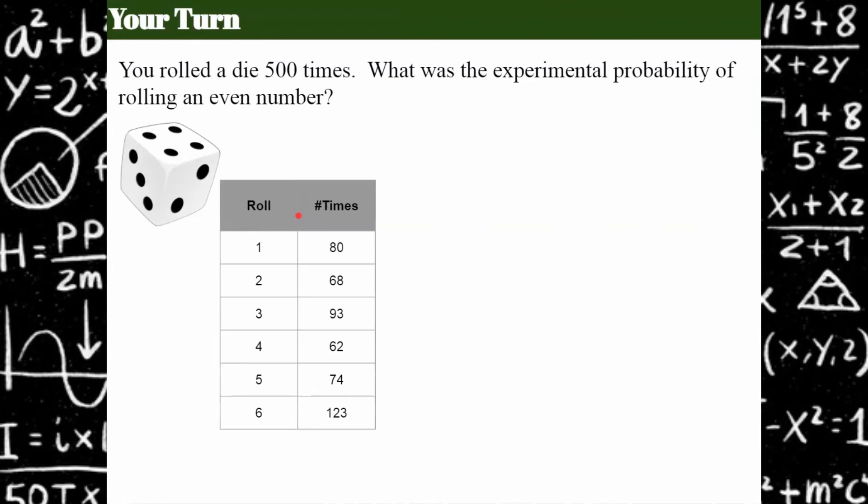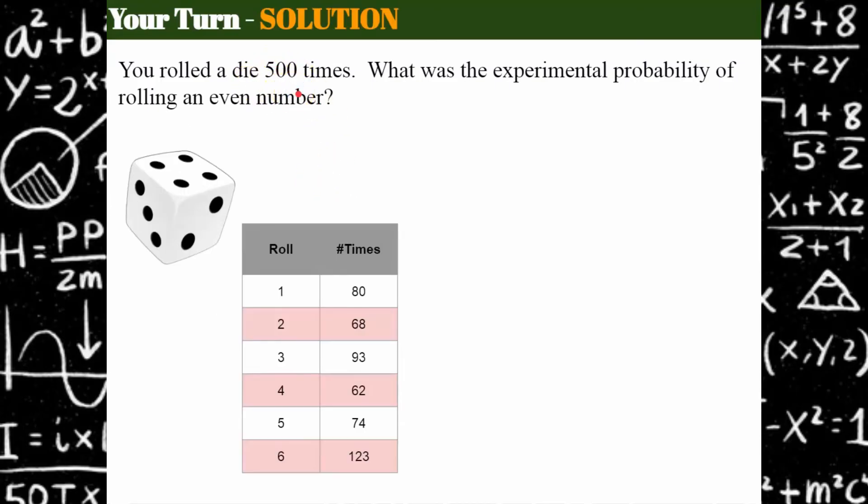Your turn. I would like you to look over this data and answer the question. Come back and hit play when you're ready. Welcome back. Let's see how you did. I rolled the number cube 500 times, and I collected the data. I'm asking, what is the experimental probability of rolling an even number? I've highlighted the even numbers in the table and how frequently those numbers were rolled.